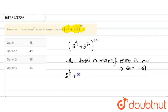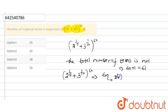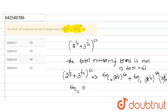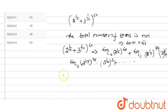So (2^(1/5) + 3^(1/10))^60 expands as: 60C0 · (2^(1/5))^60 + 60C1 · (2^(1/5))^59 · (3^(1/10))^1 + 60C2 · (2^(1/5))^58 · (3^(1/10))^2, and so on for 61 terms. Here we need to find the irrational terms.